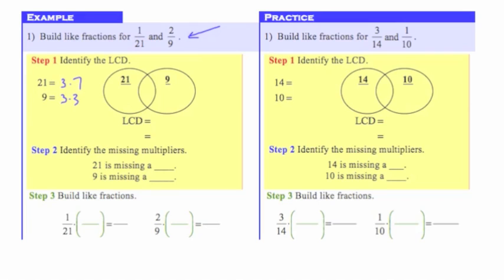Now I'm going to put these factors into the Venn diagram. In the Venn diagram, I've got a circle for 21 and a circle for 9, and there's an overlap. That overlap represents the common factors that these two numbers have. In this case, they both share a common factor of 3, so I'm going to put that common factor of 3 in the middle. When I put it in the middle, that common factor of 3 counts in the circle for 21 and also the circle for 9.